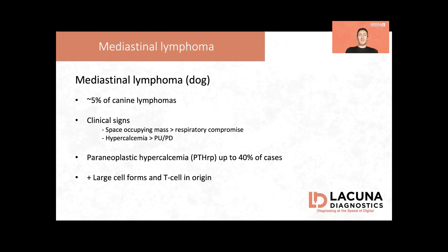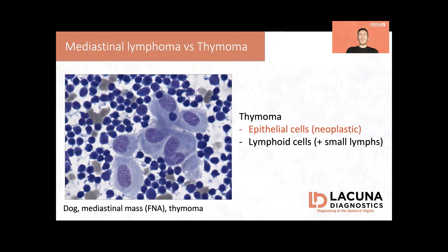Mediastinal lymphoma represents approximately 5% of all lymphomas in the canine species, so quite a small percentage. In terms of clinical signs, it's usually characterized by respiratory signs, because we are talking about space-occupying lesions in the thorax, and quite often also PU/PD, because up to 40% of dogs with mediastinal lymphoma can have a paraneoplastic hypercalcemia. Most mediastinal lymphomas are large cell lymphomas, as in the case we have seen, and they usually are T-cell in origin. It's quite important to differentiate between mediastinal lymphoma and thymoma, and often with cytology we are able to differentiate between these tumors.